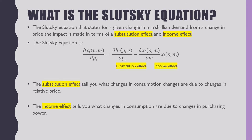What is the Slutsky equation? The Slutsky equation states that for a given change in Marshallian demand from a change in price, the impact is decomposed into a substitution effect and income effect. The Slutsky equation is: the partial derivative of Marshallian demand for good i with respect to the price of good i equals the partial derivative of Hicksian demand for good i with respect to the price of good i, minus the partial derivative of Marshallian demand for good i with respect to income times the Marshallian demand for good i.